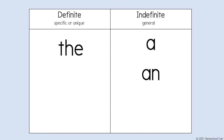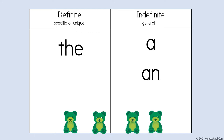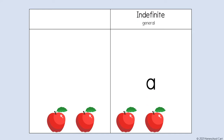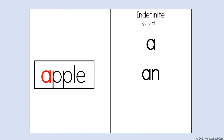Let's say I have some more teddy bears. This time, you would like a very specific teddy bear. Then we would use the definite article: the. Whenever you have a word that begins with a vowel, and you are deciding whether to use a or an, use an.